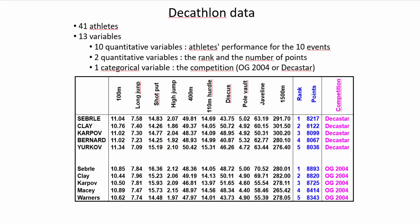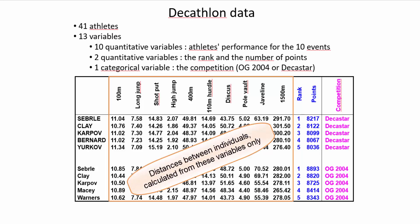We will run the clustering on the decathlon dataset. A reminder: we have 41 athletes and 13 variables. The first 10 variables relate to the performances of the 41 athletes in the 10 decathlon events — for example, 100 meters, long jump, shot put, etc. Then there are two quantitative variables used as additional variables: the rank of the athlete in the event and the number of points obtained. Finally, there is a qualitative variable, which is the name of the competition: Dekastar or Olympic Games.